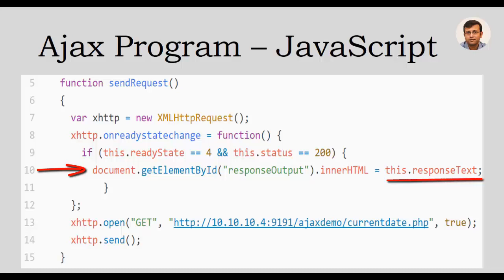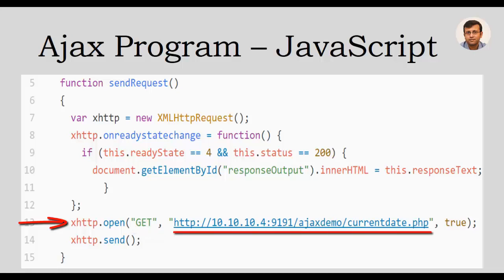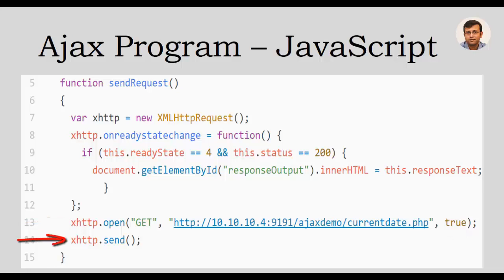responseText is a property which contains the content received from the server as a response. We then close the function expression assigned to onreadystatechange. On line 13, the open method, which belongs to the XMLHttpRequest object, begins the server communication by creating a request to the specified URL. The GET method is the first parameter, the second parameter is the URL, and the third parameter is a flag — true means asynchronous communication. On line 14, the send method sends the request created above, and it also belongs to the XMLHttpRequest object of the Ajax API.